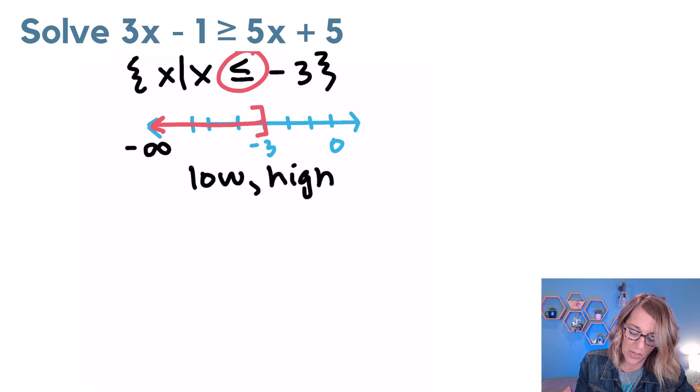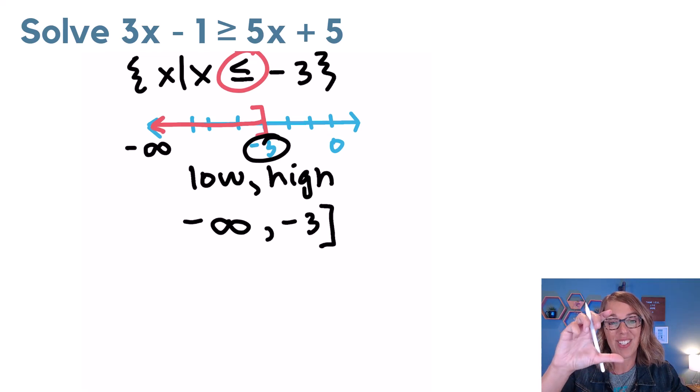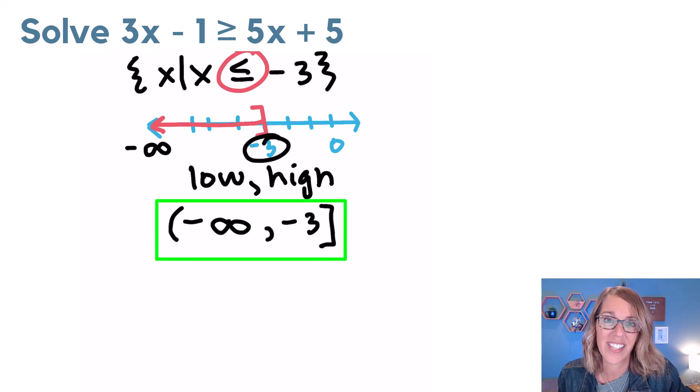This time, my lowest value, it goes on forever. So it's going to be negative infinity. And my highest value is that negative 3. So comma, negative 3. I'm going to match that square bracket to close my interval. To open my interval, I've got an infinity there. So I want to go ahead and open it with a parenthesis.